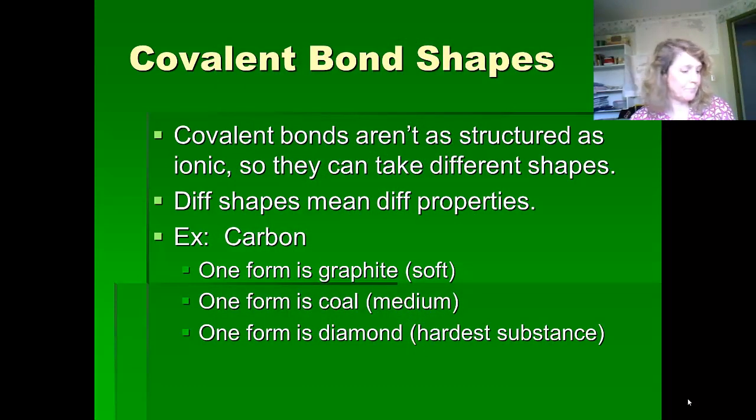So covalent bond shapes, you can kind of make a generalization about ionic bonds, but covalent bonds, it really depends on the type of bond and the shape of the molecule as to how strong the bond is actually going to be.